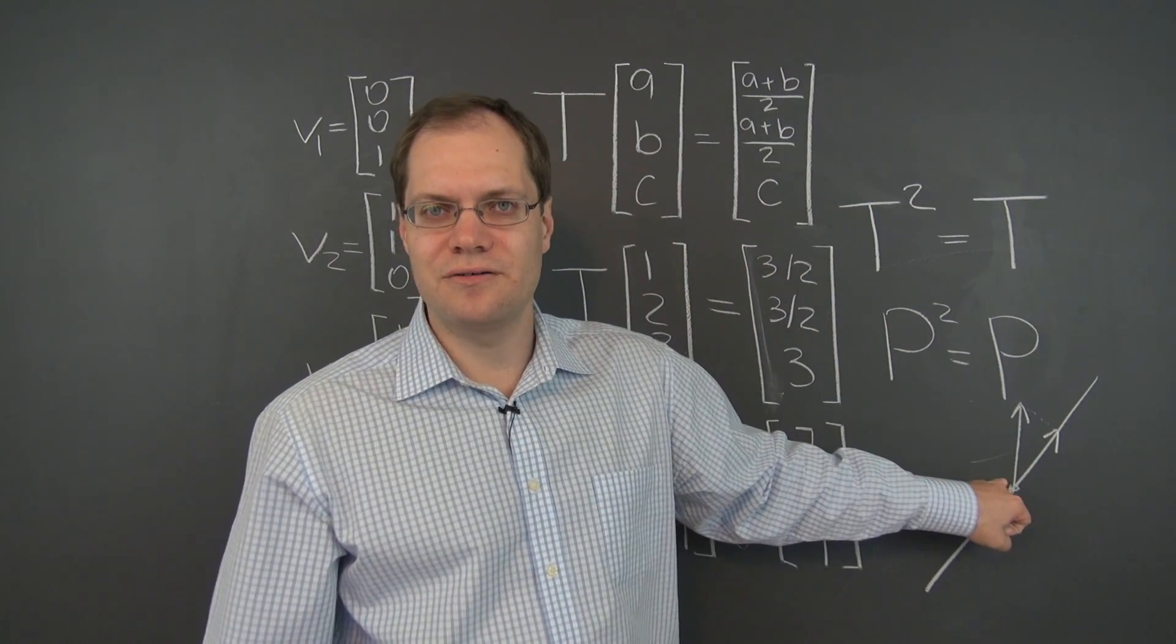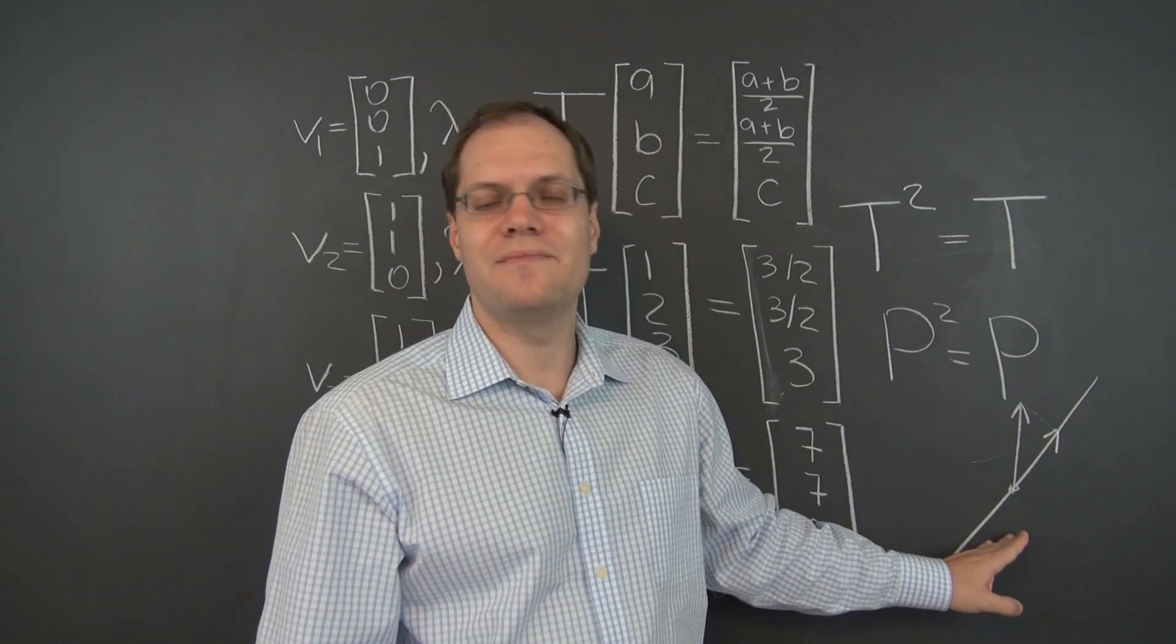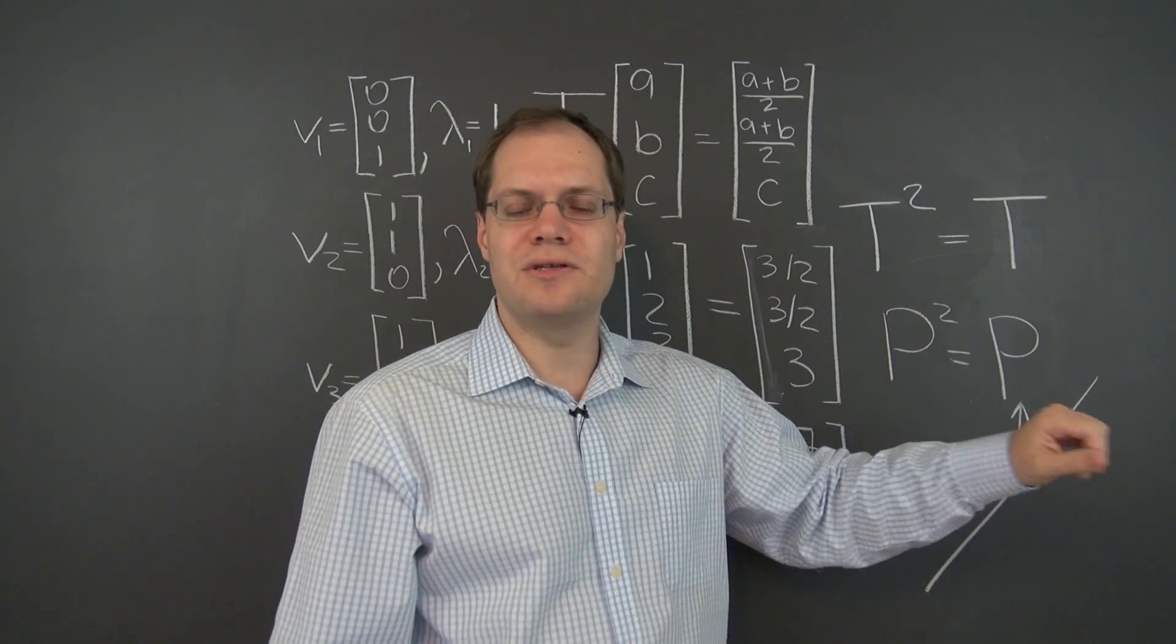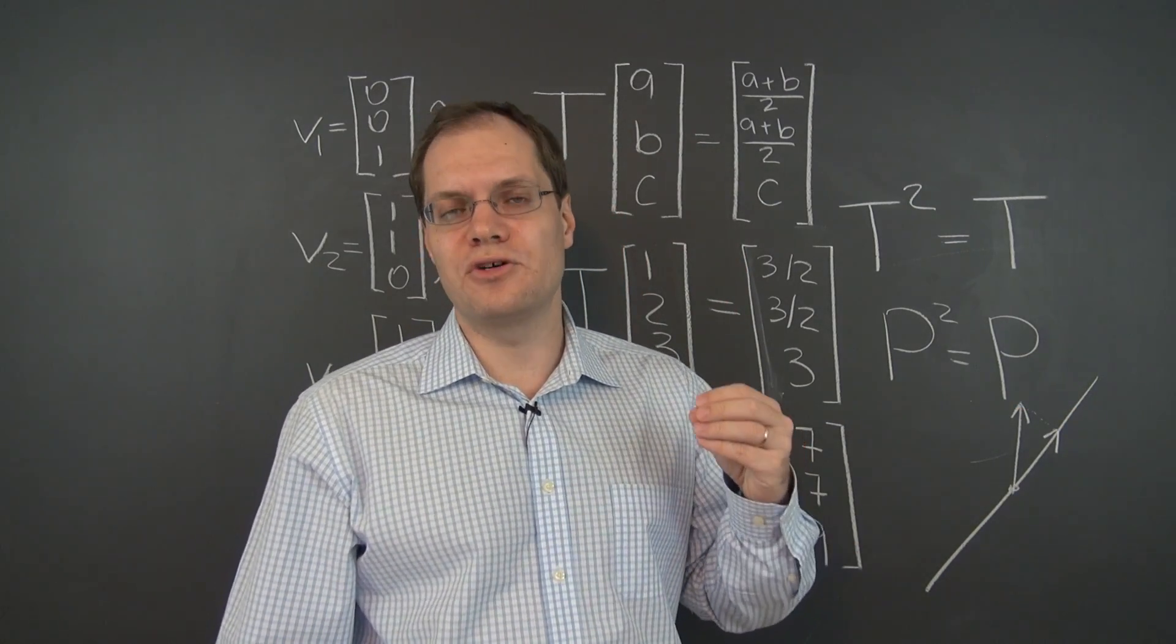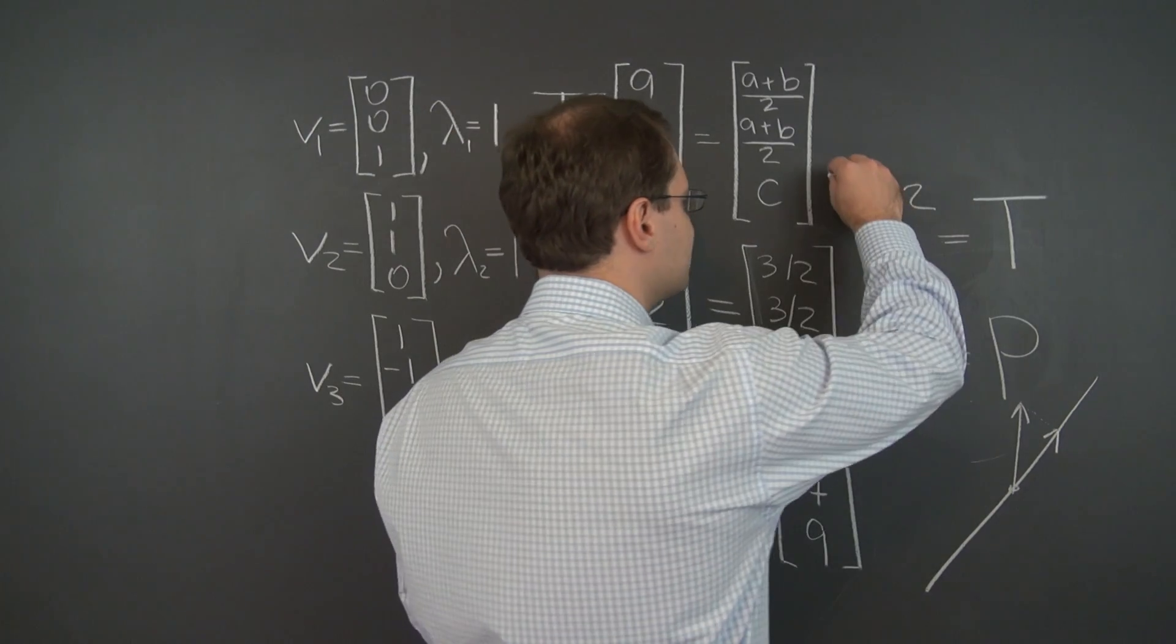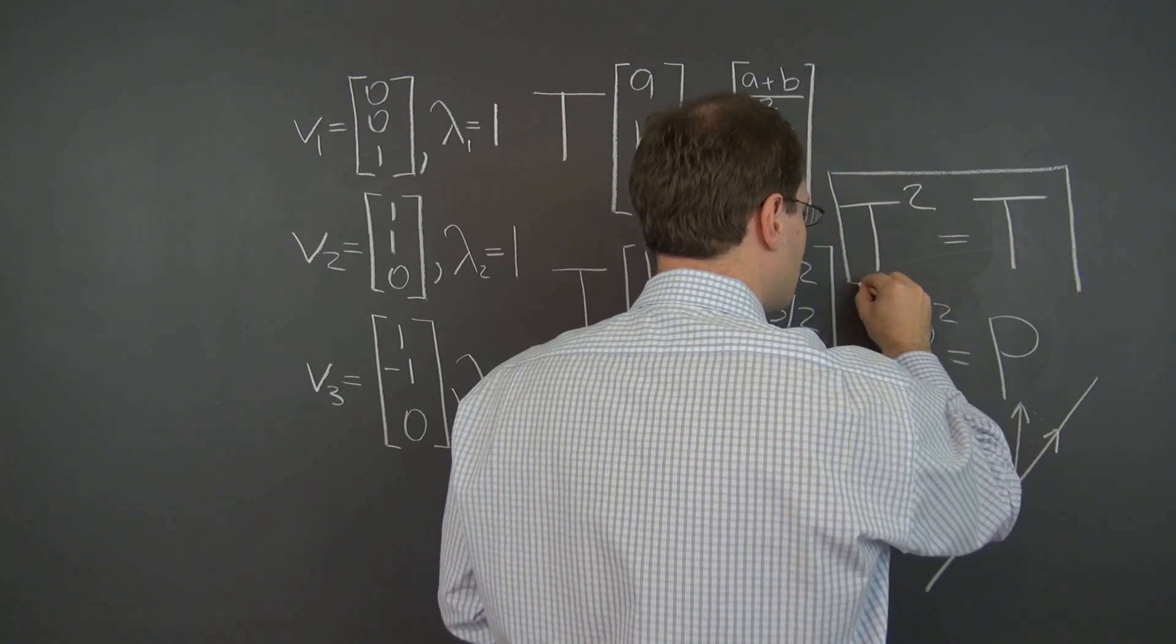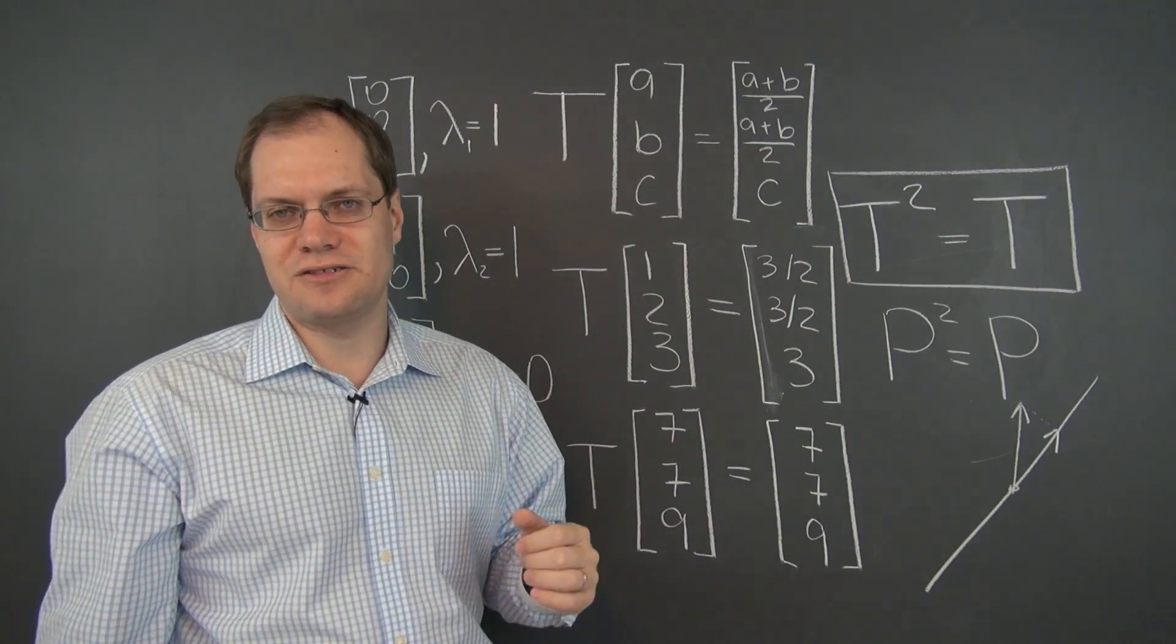And the eigenvalues here were 0 and 1. Anything along the line, the corresponding eigenvalue was 1. And the eigenvectors perpendicular to the line, the corresponding eigenvalue was 0. So this is very similar. So just because this transformation satisfies this rule, we would call it a projection. So this is a kind of projection.